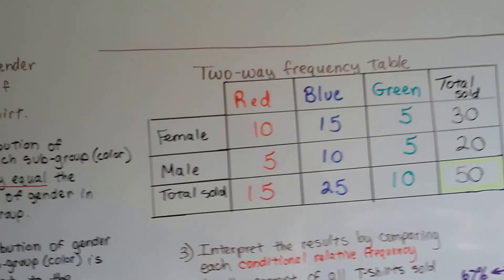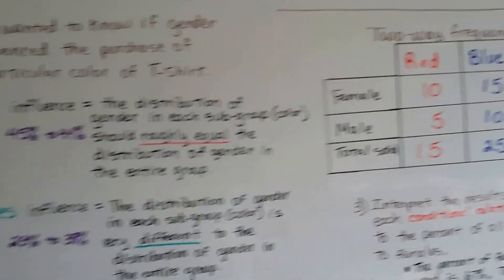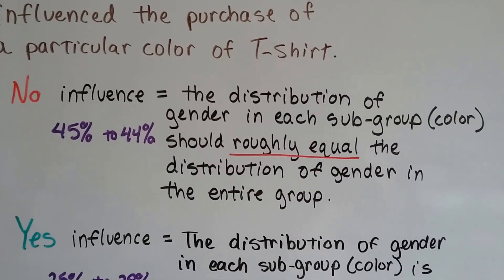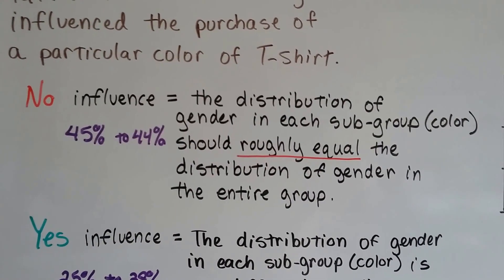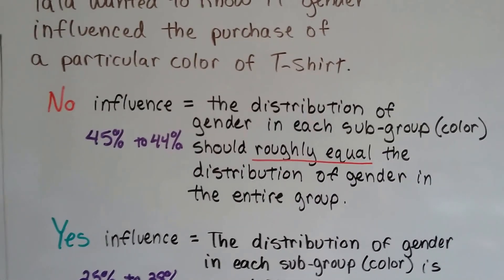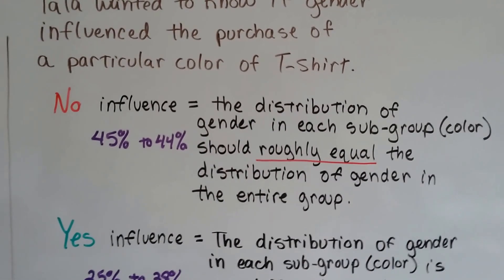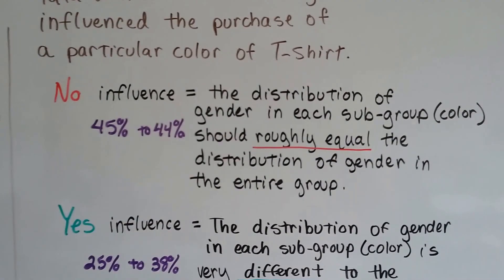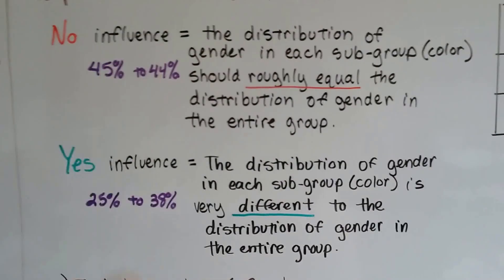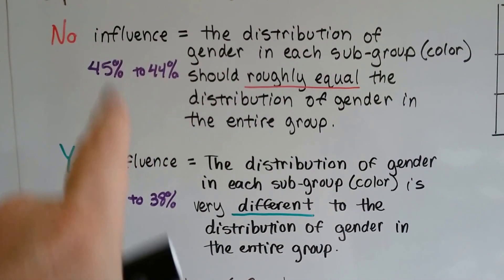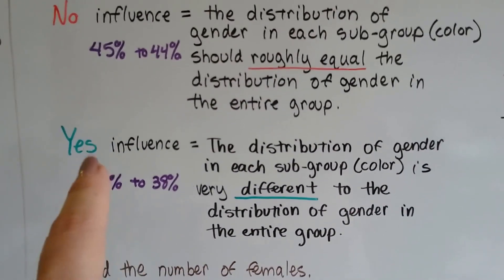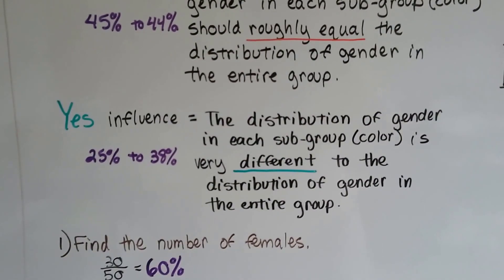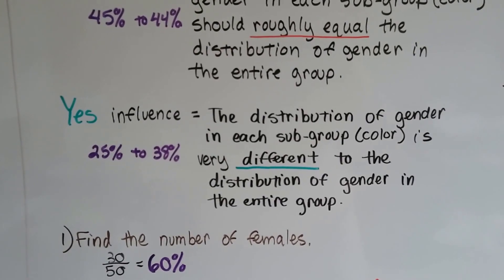I'm going to use this two-way frequency table to find out if there's an association between variables. If there's no influence, the distribution of gender in each subgroup, the color red, blue, or green, should roughly equal the distribution of gender in the entire group. So we would have like 45% to 44%, or 45% to 45%, or it would be very close or equal. That's no influence when they're really close to each other or equal. When there's a difference between them, there is an influence. The distribution of gender in each subgroup is different or very different to the distribution of gender in the entire group.